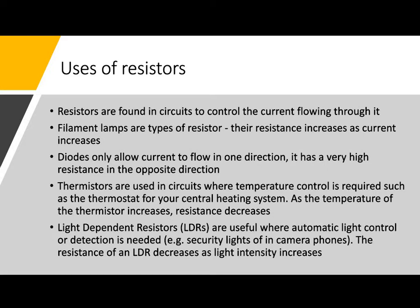Diodes are another type of resistor which only allow current to flow in one direction — in the opposite direction they have a very high resistance. Thermistors are used in circuits where temperature control is required, such as the thermostat in your central heating system. As the temperature of the thermistor increases, resistance might decrease. Light dependent resistors are useful where we want automatic light control or light detection — for example, security lights or the camera in your phone. The resistance of an LDR decreases as light intensity increases.